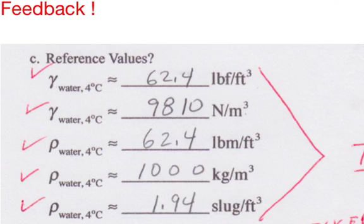The reference values are listed here. Here's three tips for memorizing this list. First, memorize that the density of water is 1,000 kilograms per cubic meter. If you can remember that, if you multiply by 9.81, the gravitational constant, you can remember that the specific weight of water is 9810 newtons per cubic meter.